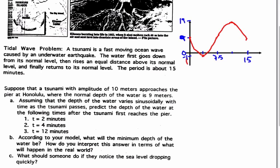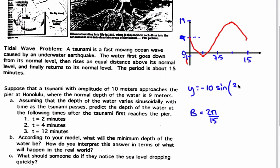I'm going to choose sine because I'm starting at the principal axis, and I'm going to choose negative sine — y equals negative sine — because I'm going to start by going down. My amplitude is 10, so let's do negative 10 sine. Now I need to work out B: B equals 2π over the period, which is 15. So that gives us 2π over 15 times T. I don't need any horizontal translation, but I do need to move the principal axis up to 9. So there we have the function.